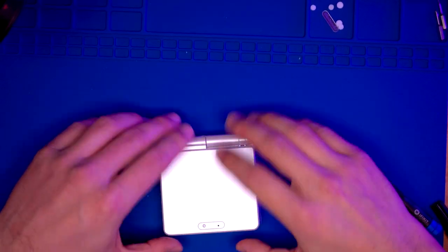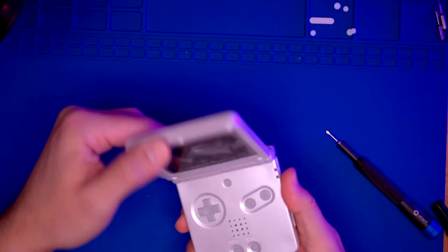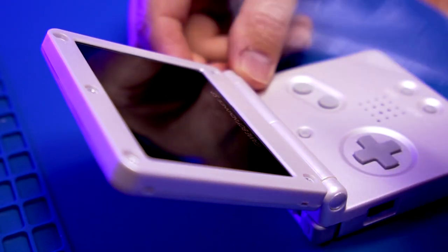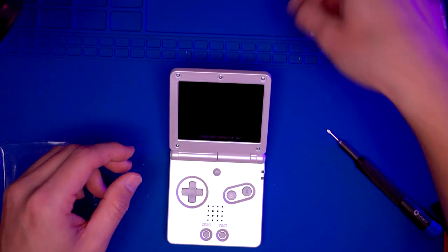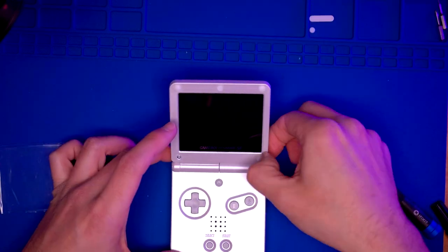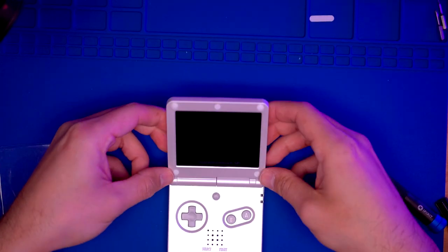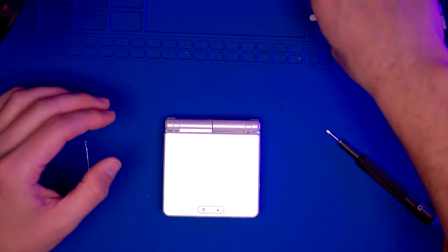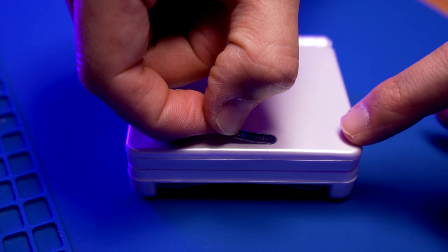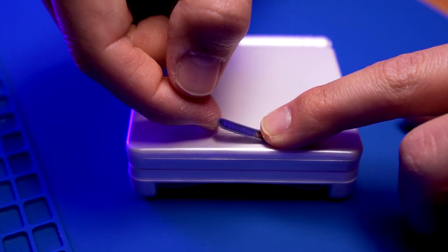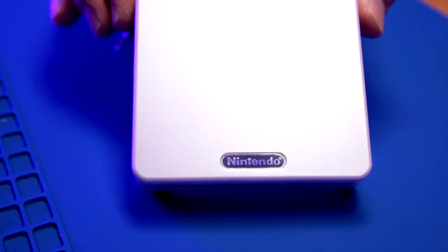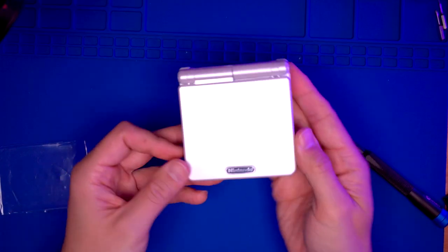Now we're just going to put the finishing touches. To start, let's peel the protective film. Then we're going to put the rubber covers on for the screws near the LCD panel and then the Nintendo logo on the top of the clamshell. This one actually looks pretty good.